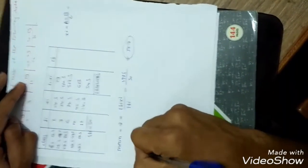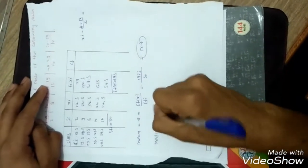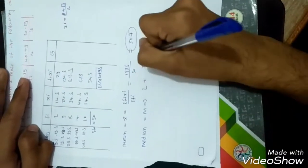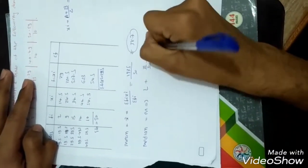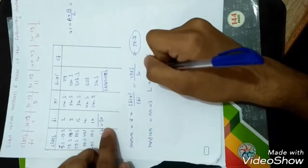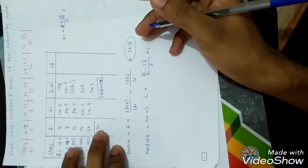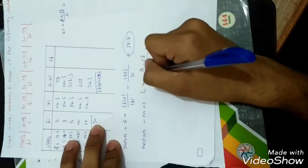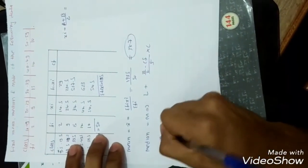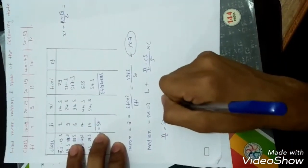Now we find the median for grouped data. The equation is: L plus (N by 2 minus CF) divided by F, multiplied by C. Since summation FI equals 50, which is N, and this is an even number, we use N by 2. So N by 2 equals 50 by 2 equals 25.